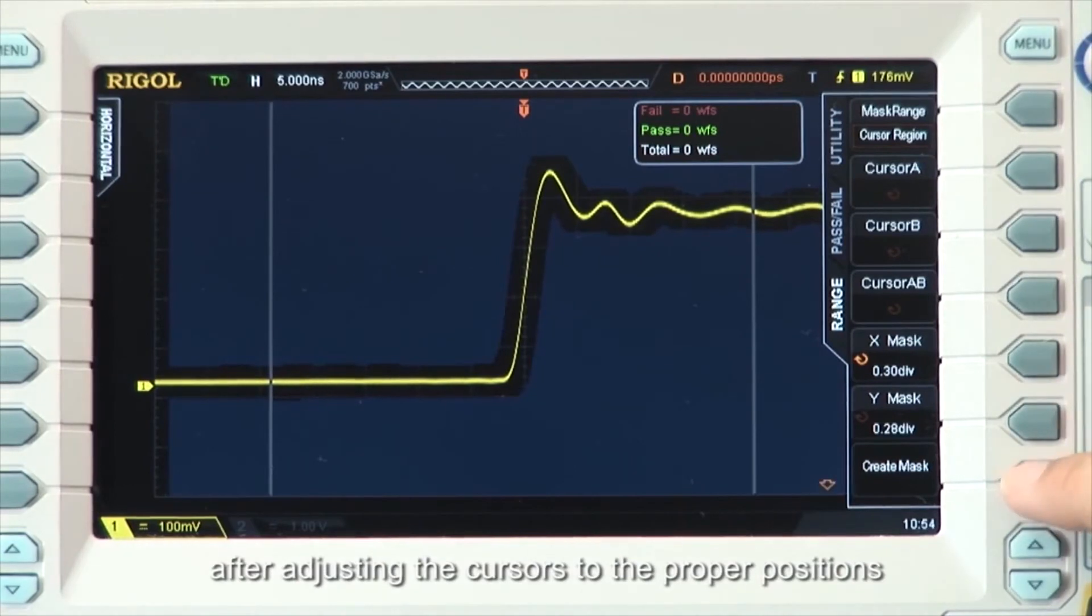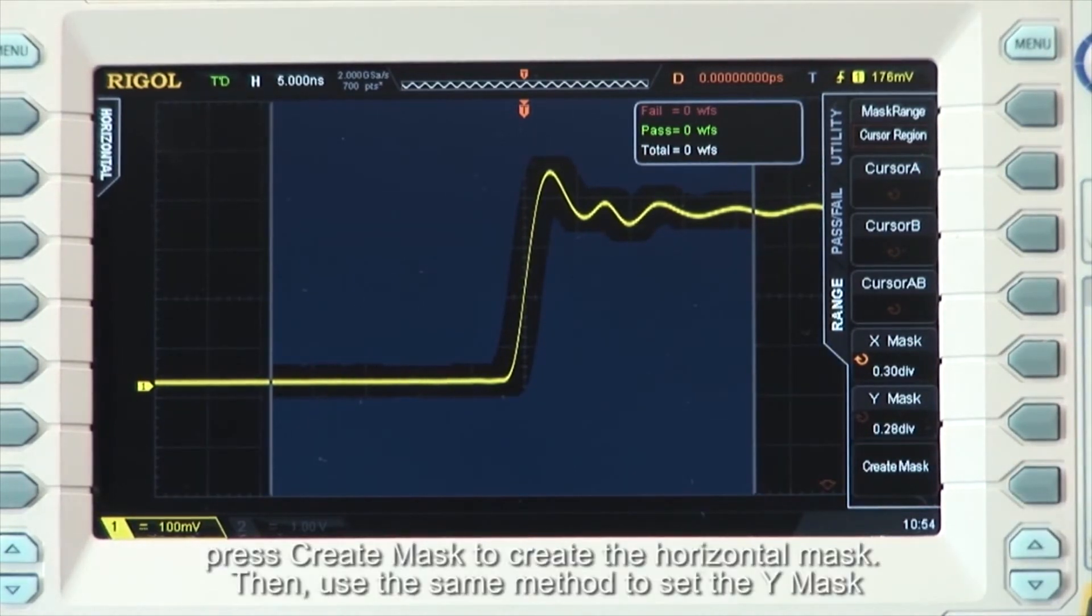After adjusting the cursors to the proper positions, press Create Mask to create the horizontal mask, then use the same method to set the Ymask.